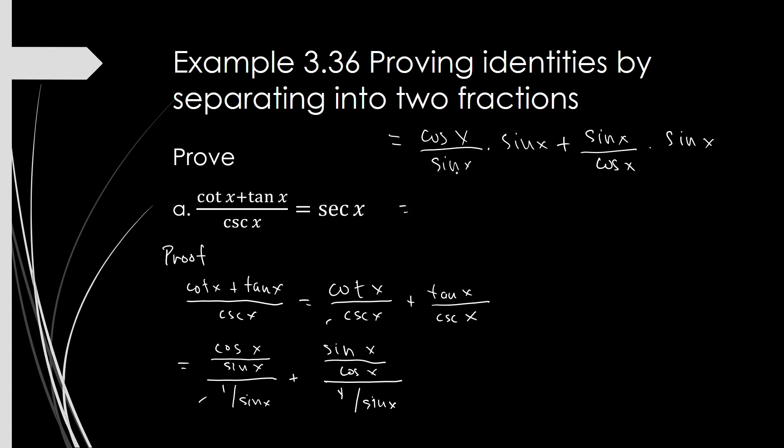Sine of x divided by sine of x is 1, so we are left with cosine of x. And in this one, sine of x times sine of x is sine squared x divided by cosine of x.